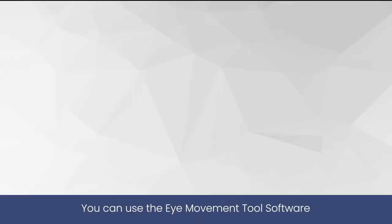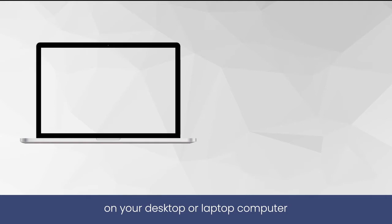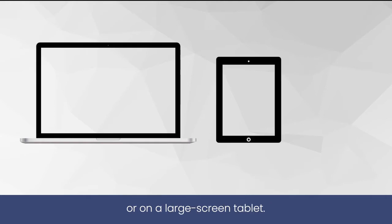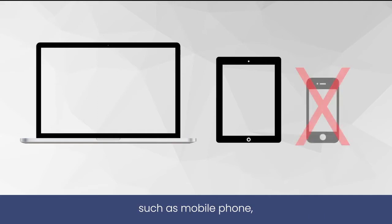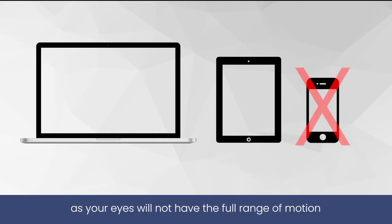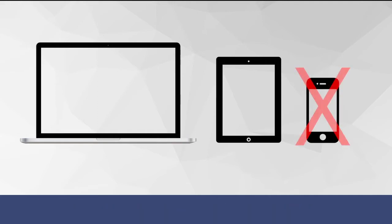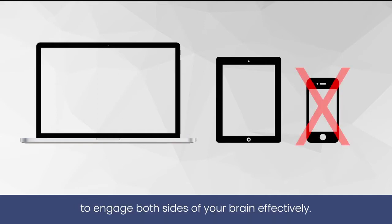You can use the iMovement Tool software on your desk or laptop computer or on a large screen tablet. It is not recommended for use on a smaller screen, such as a mobile phone, as your eyes will not have the full range of motion to engage both sides of your brain effectively.